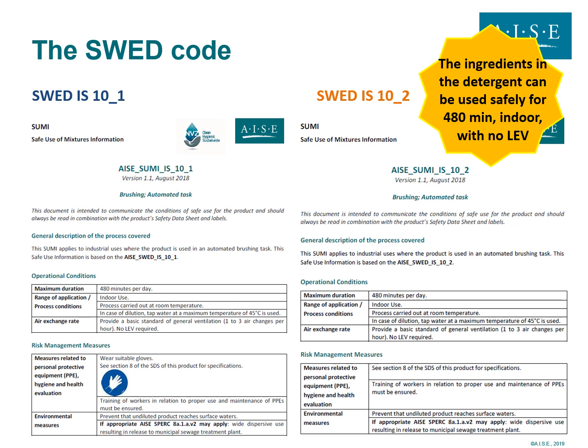and no gloves, they will pick SWED IS 10-2 and therefore the SUMIS IS 10-2 that doesn't require gloves, and that will be what is shared with the professional cleaning company. If instead there is even one ingredient that requires the use of gloves, then SWED IS 10-1 will be picked with the corresponding SUMIS.